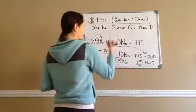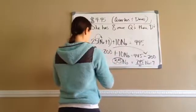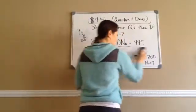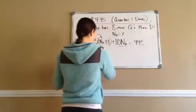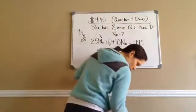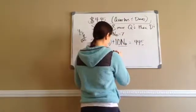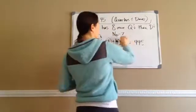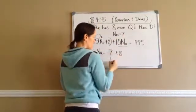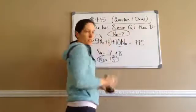Now that I know ND equals 7, I use the information from earlier: NQ equals ND plus 8, and ND is 7, so 8 plus 7 is 15. My NQ is 15, my ND is 7.